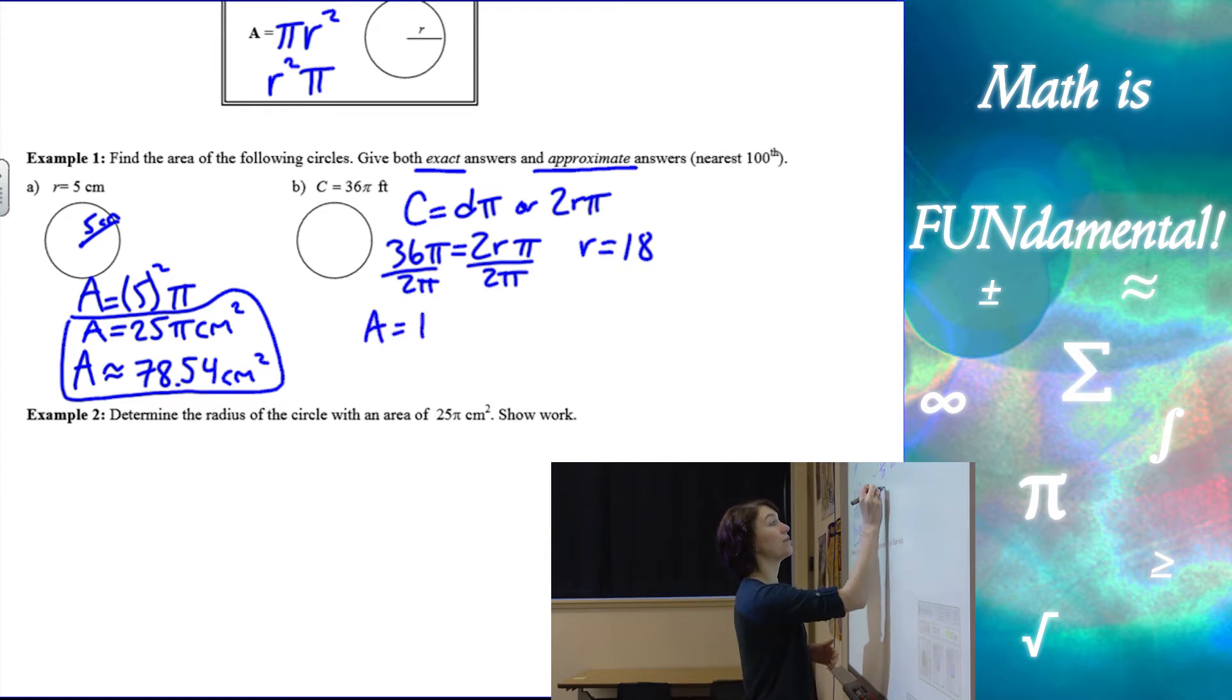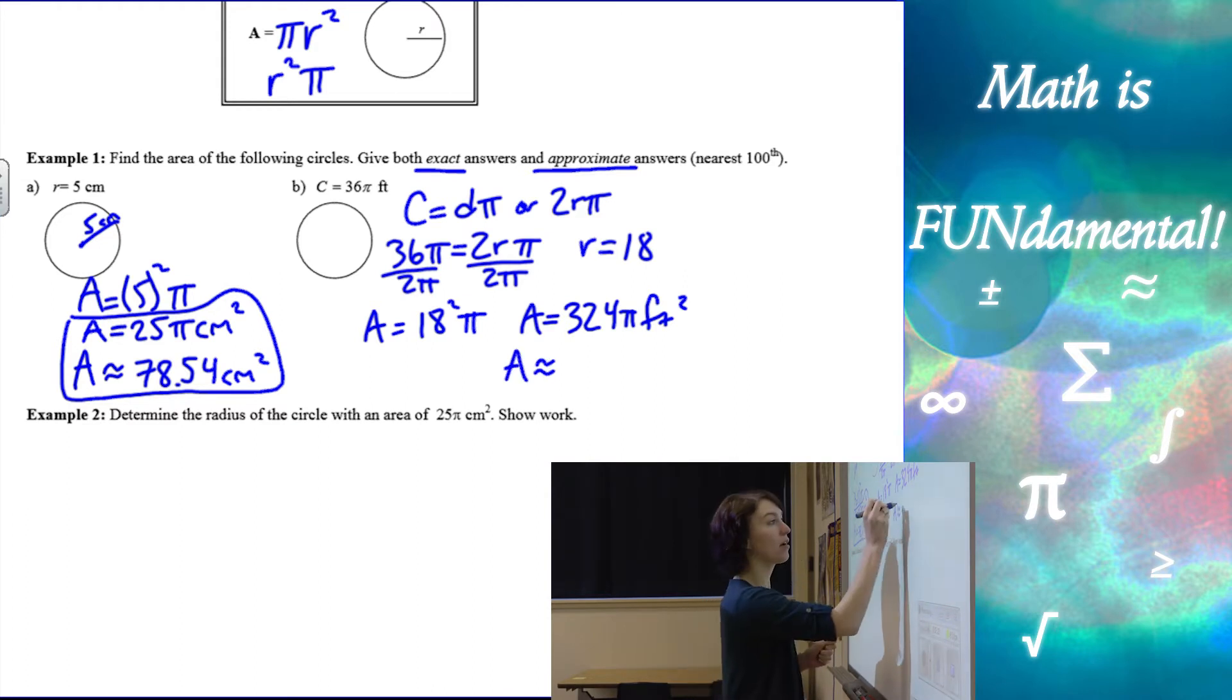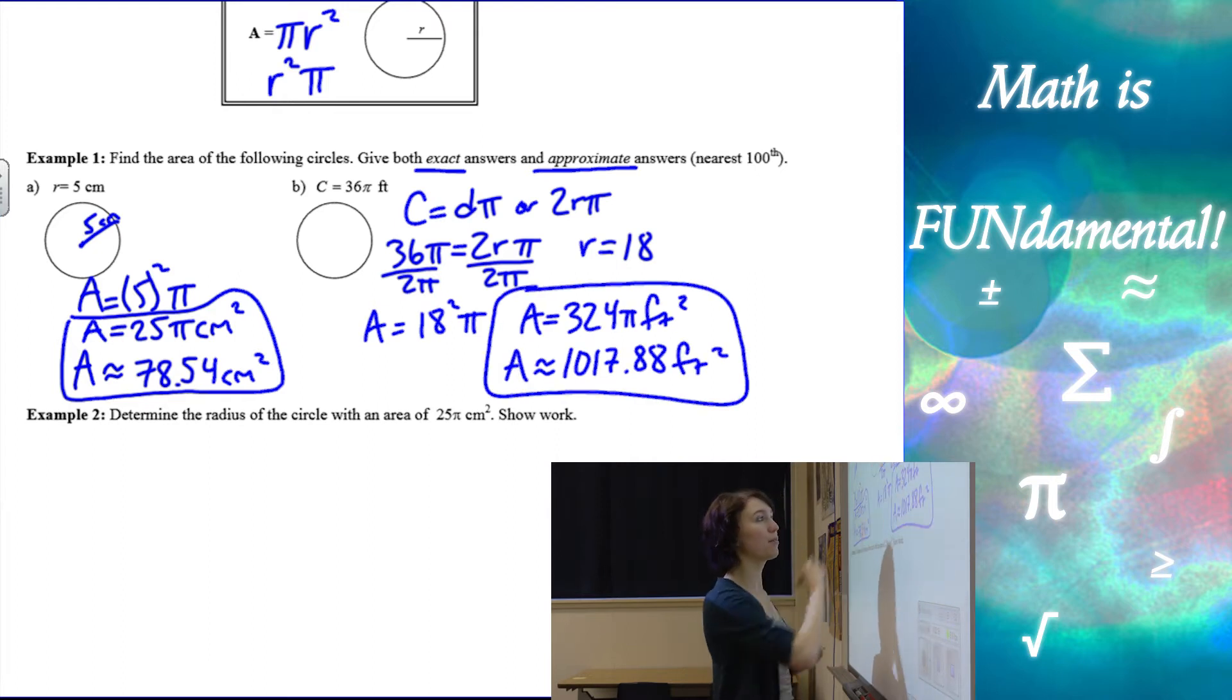So area is going to be 18 squared times pi, which is exactly 324 pi feet squared. So there's my exact answer. And then my approximate answer, taking that number and plugging it into our calculator, we get 1017.88, rounding to 2 decimal places, feet squared. So here's a couple quick examples talking about area of a circle.